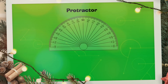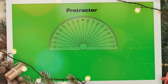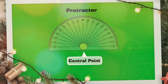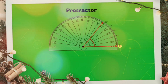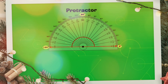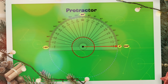The unit of angle is degrees. We can measure the angle with the help of an instrument called a protractor. You can see the protractor in your geometrical box. The protractor has a midpoint called the central point. Angles on a protractor start from zero degrees and end at 180 degrees — it looks like a semicircle.